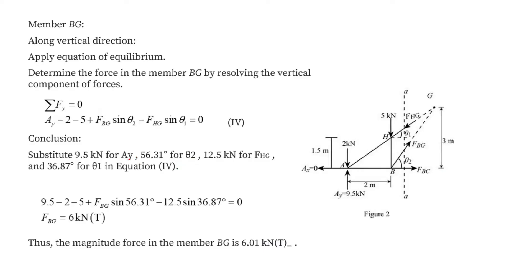To find the force in member BG, we apply the condition of equilibrium and equate all forces in the vertical direction to zero. This gives a relation between the force in BG and the force in HG. Substituting FHG = 12.5 kN, Ay = 9.5 kN, and the values of theta1 and theta2, the force in member BG comes out to be 6.1 kN, and it is a tension force.